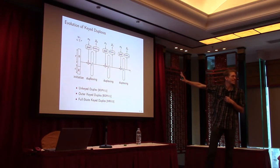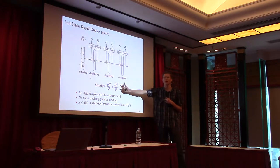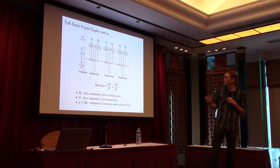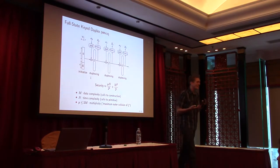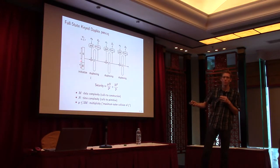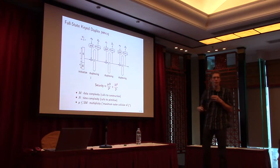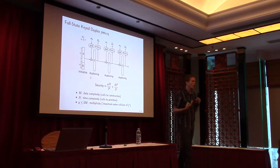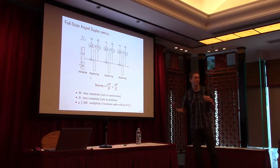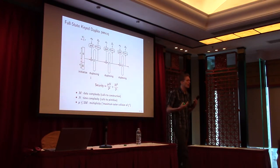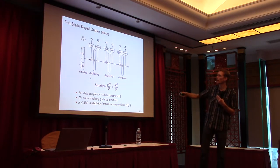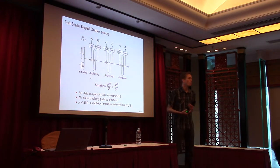Looking in more detail at the scheme: what we proved two years ago is roughly this bound. We proved the scheme is secure as long as mu times N over 2 to the K plus M squared over 2 to the C is less than one. Here K is the key size, C is the capacity, K is always smaller than C, M is the data complexity corresponding to the number of queries the adversary makes to the scheme, N is the number of calls the attacker can make to the permutation, and mu is the multiplicity — the maximum multicollision on the outer part of the state. Intuitively mu is at most 2M.